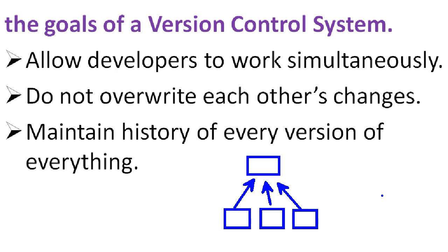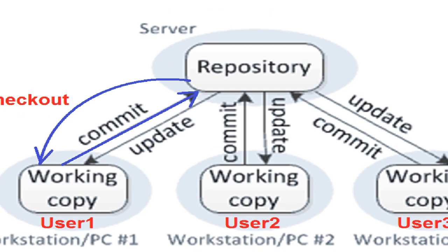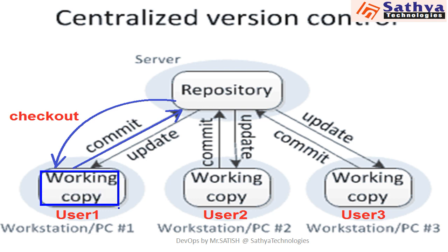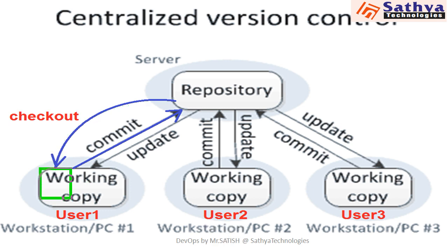In case of a centralized version control system, we have a central repository and every developer will have their own working copy. The working copy is a private workplace where the developer maintains their source code. As a new developer, first we have to get the code from the central repository. Here, checkout is a command to get the code from the central repository. Once we get the code, we can modify it in the working copy, then add the modified code to the central repository. Commit is the process of adding code to the central repository.